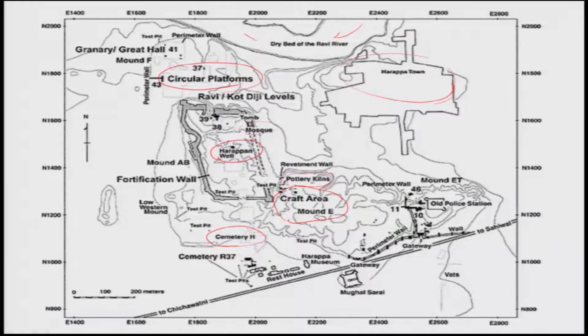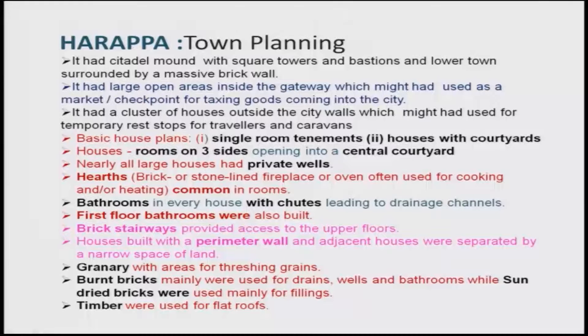Remnants of perimeter walls and various walls can be seen from different regions, and excavations have located several remains of structures. The Harappan town planning had a citadel mound with square towers and basins. The lower town was surrounded by massive brick walls and had large open areas inside gateways, which might have been used as a market or checkpoints for taxing goods coming into the city.